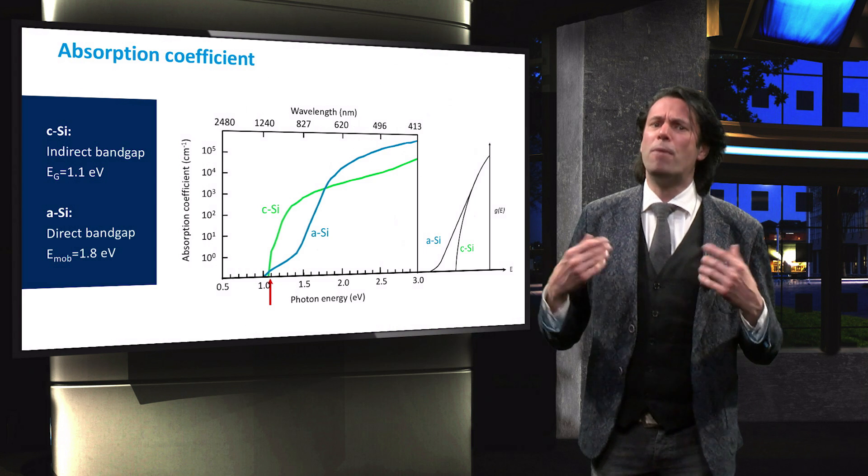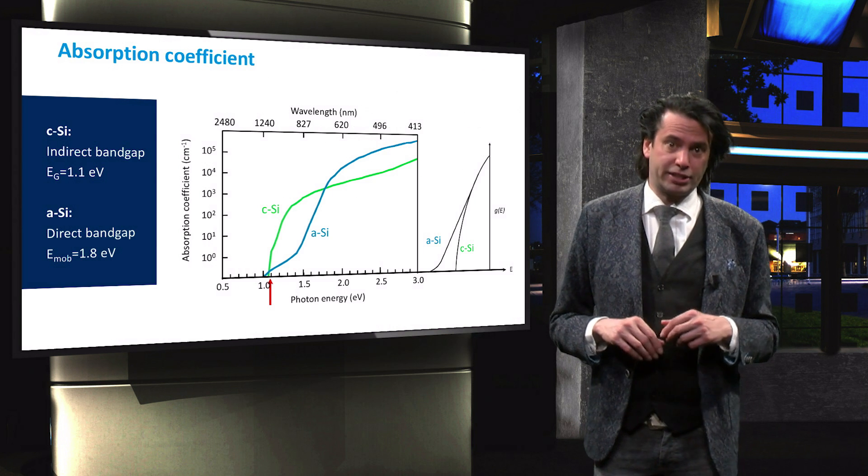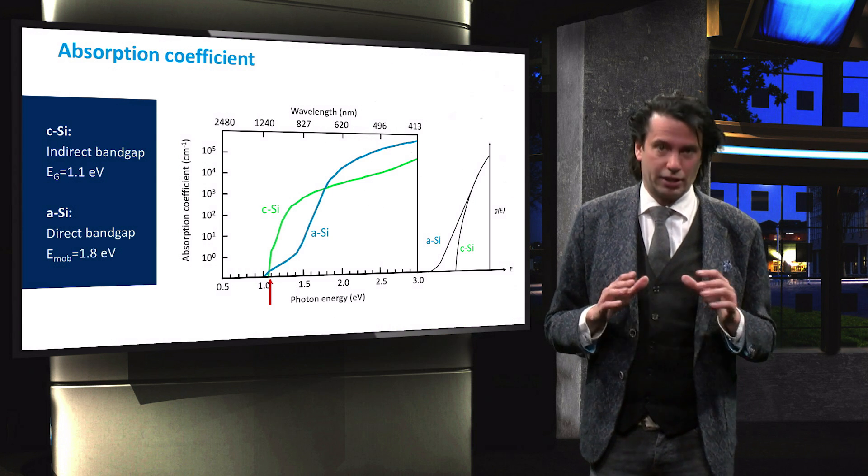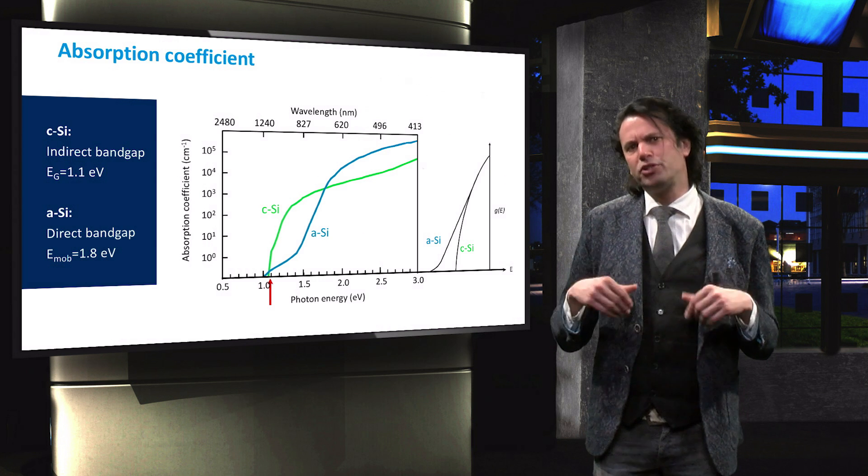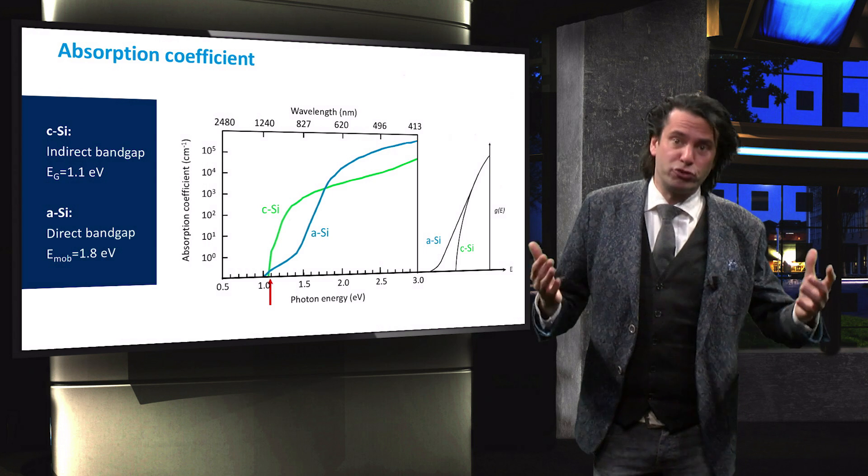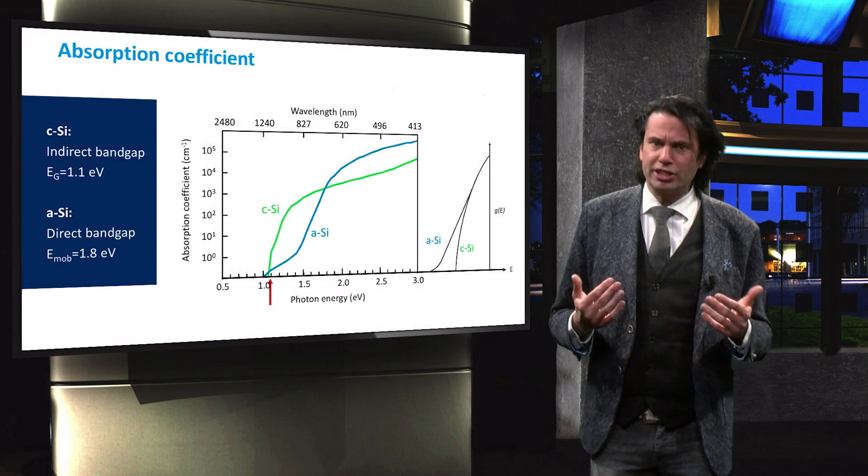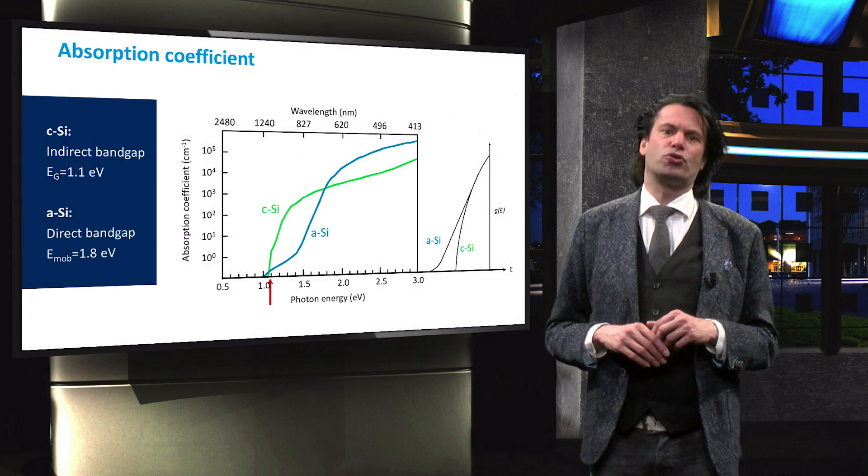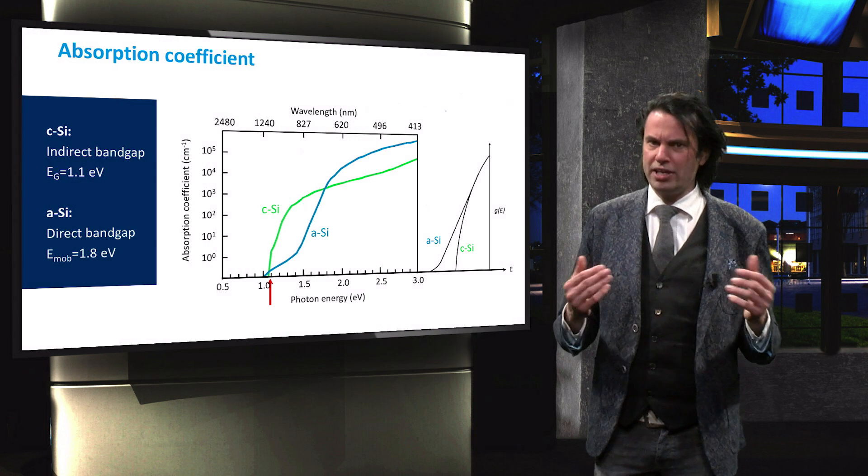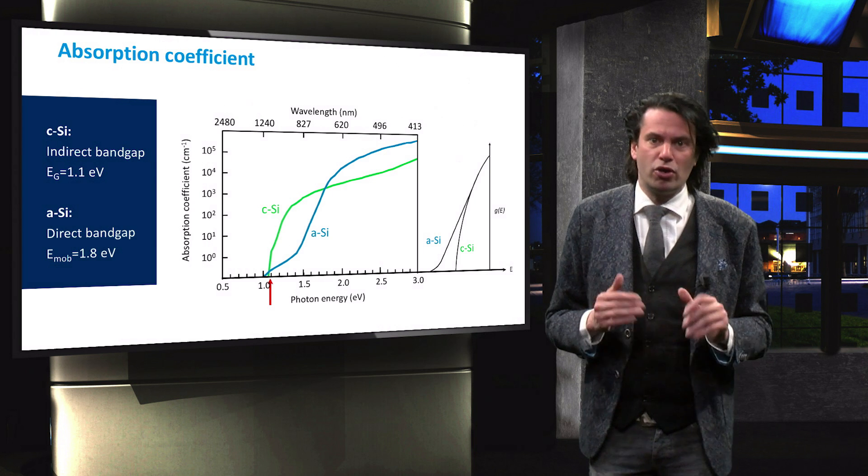As the photon energy increases, both the number of valence electrons capable of making this transition increases as well. Due to the defect states and band tails of amorphous silicon, electrons can already be excited to the conduction band at very low photon energies. It already starts absorbing from very low energy levels.